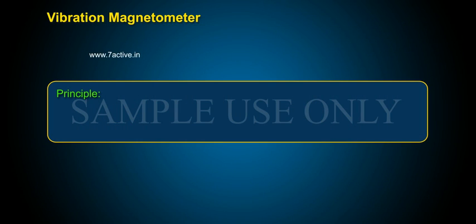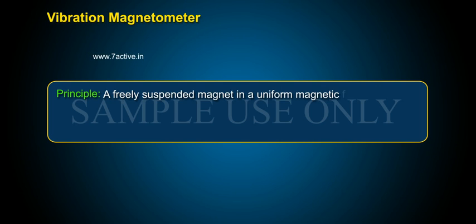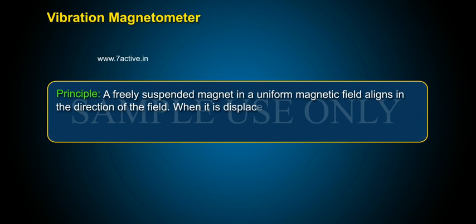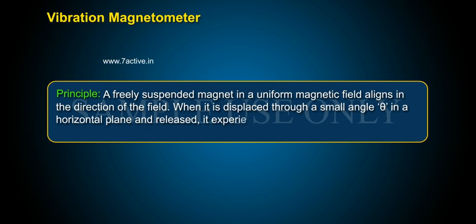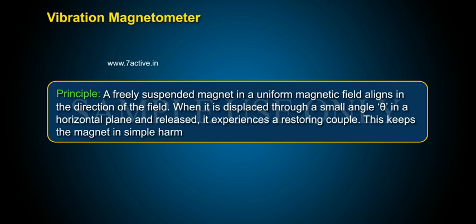Principle: A freely suspended magnet in a uniform magnetic field aligns in the direction of the field. When it is displaced through a small angle theta in a horizontal plane and released, it experiences a restoring couple. This keeps the magnet in simple harmonic motion.